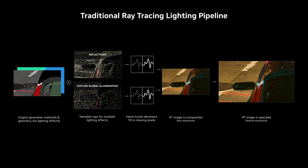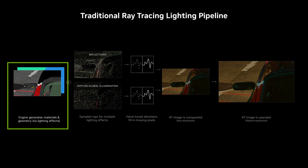DLSS 3.5 improves ray tracing with a new AI model that is more accurate and more beautiful than traditional rendering methods. Let me show you how. First, we need to understand how a ray traced image is computed. The game engine has the materials and geometry for the scene, but that doesn't tell us how the scene looks because we haven't computed how all the lighting interacts with the scene.